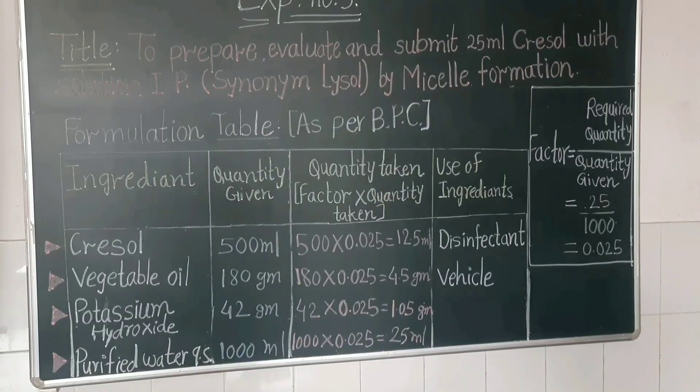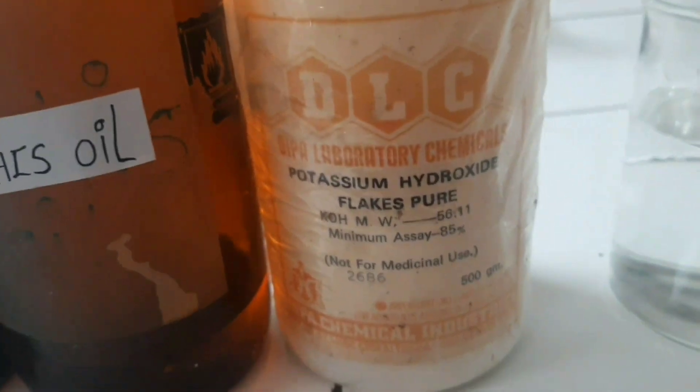We have to find out the vehicle. Chemicals required for this experiment: Cresol, vegetable oil (that is arachis oil), potassium hydroxide, and purified water.